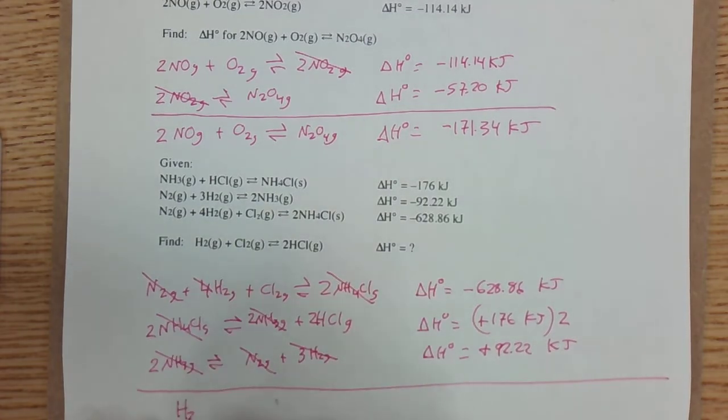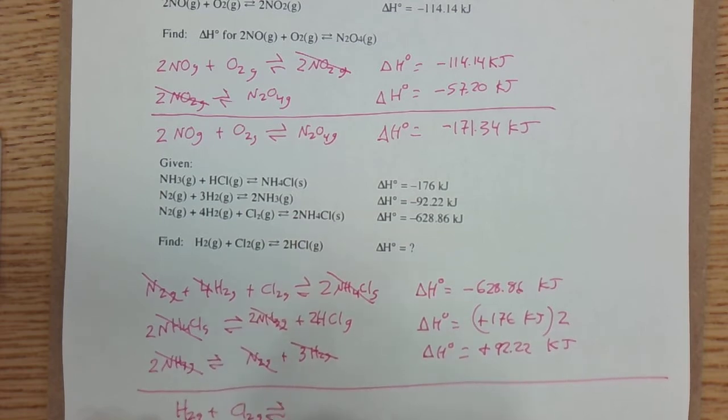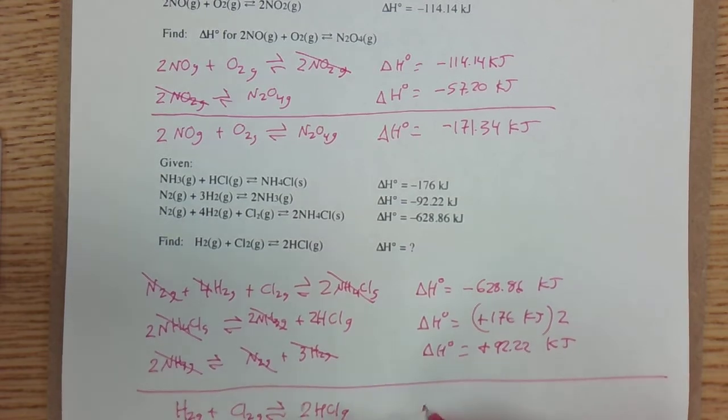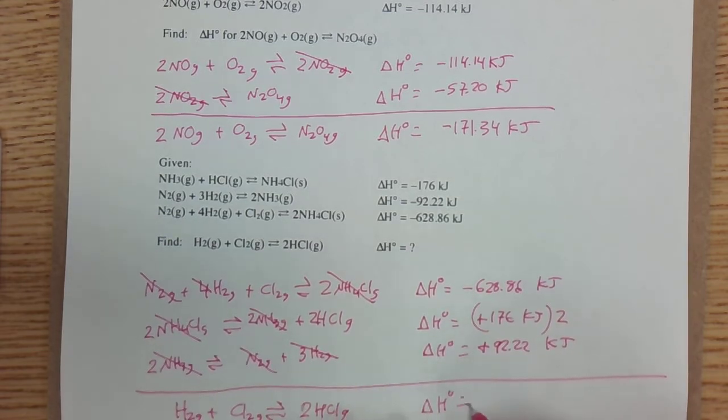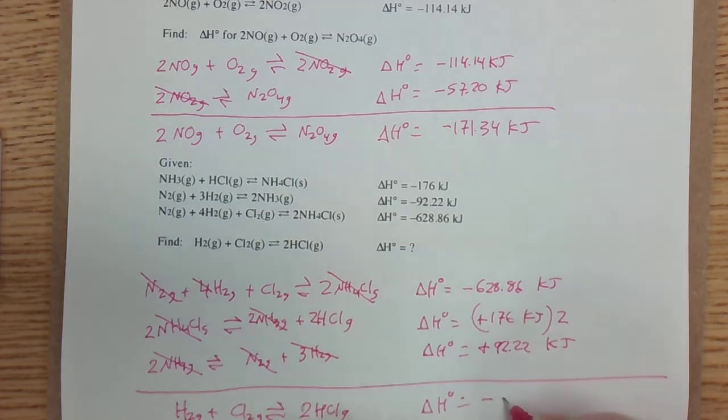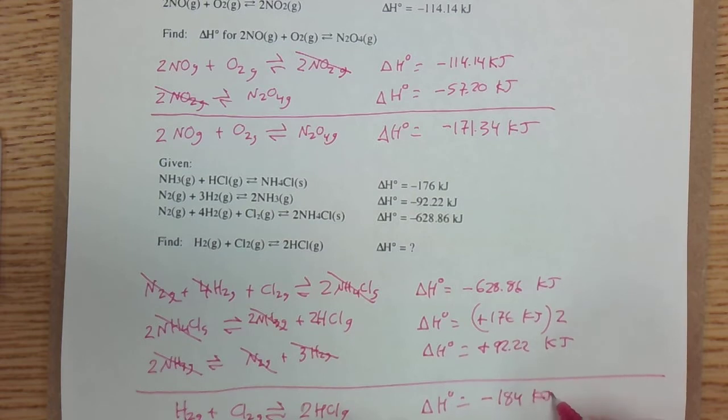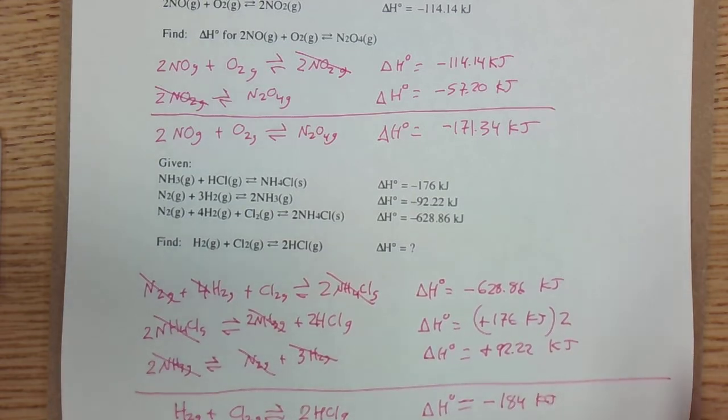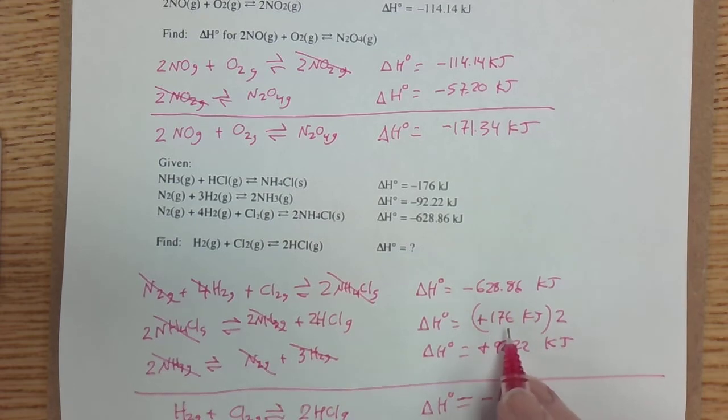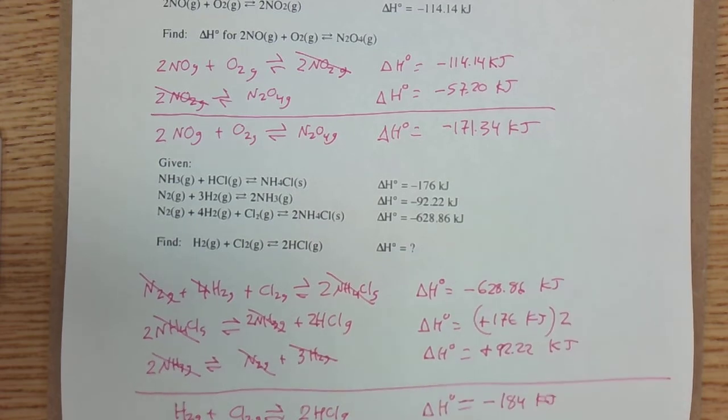So now I have H2 gas plus Cl2 gas to give me two HCl gas. And now I'm going to add all of these up, do it with my calculator. And to the nearest whole number, it's negative 184 kilojoules. I'm going to do that based on a whole number because the 176 is a whole number.